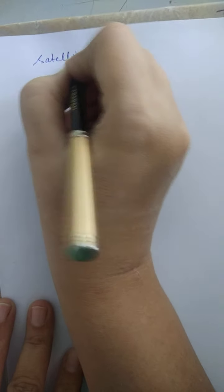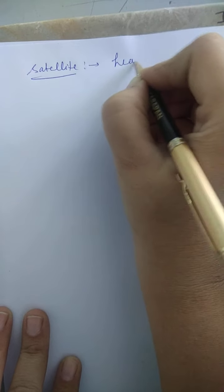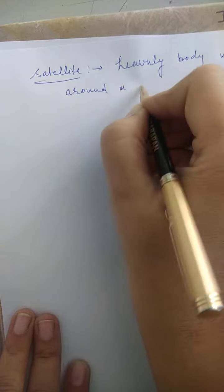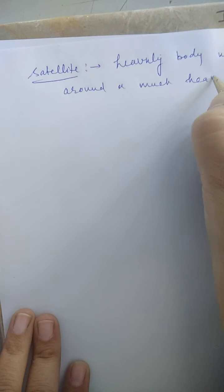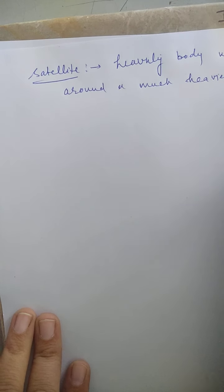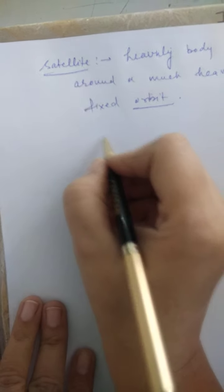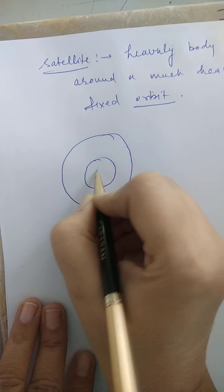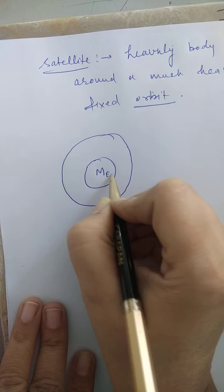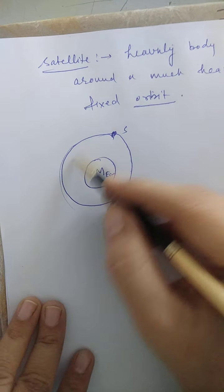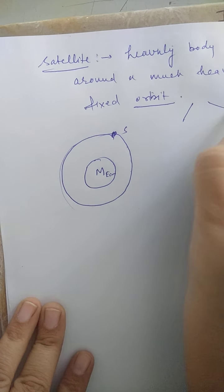Good afternoon students, today we are discussing the next topic: satellite. A satellite is a heavenly body which revolves around a much heavier body in a fixed orbit. For example, the satellite of Earth is the Moon. This satellite continuously revolves around the planet in a fixed orbit. There are two types of satellites: one is natural and the second is artificial.